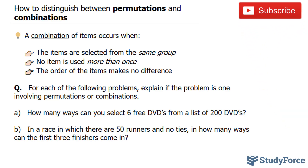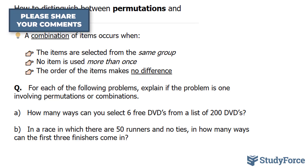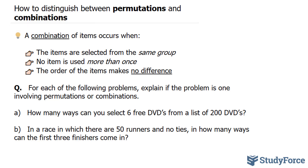In part B, we're asked: in a race in which there are 50 runners and no ties, in how many ways can the first three finishers come in? Now, it's a race — order is important. The order in which each runner finishes makes a difference. Therefore, this is a permutation.